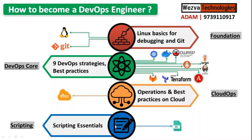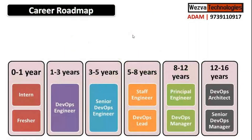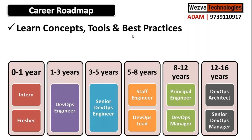Without scripting, will you get a job? Yes, you will get a job. But when expectations are high, salary will also be high. The more you know, the more you can tell yourself you are a full-fledged DevOps engineer. Your roadmap should be: foundation first, then core, then cloud ops, then scripting. Once you do that, take some projects and learn each area or combine them to automate everything end to end.